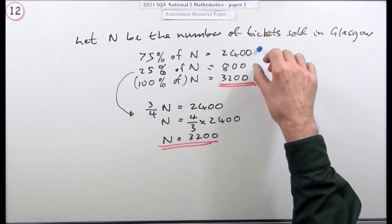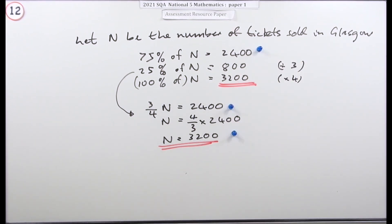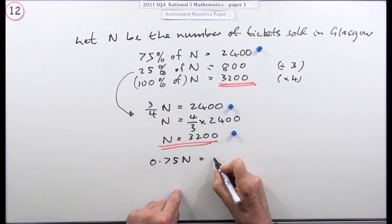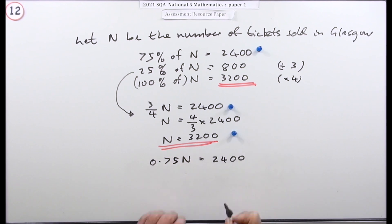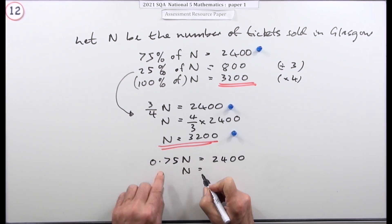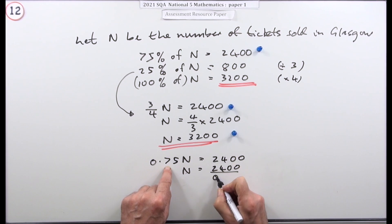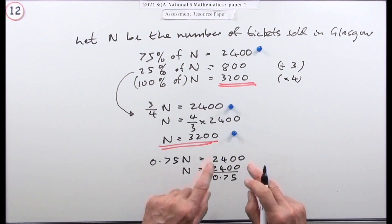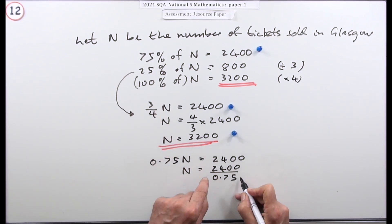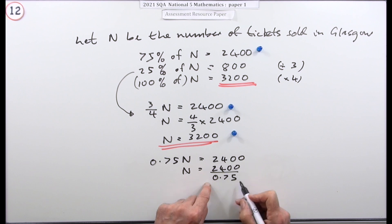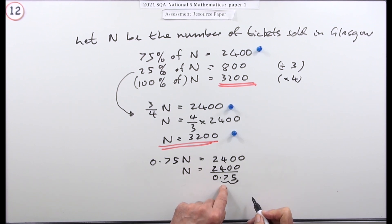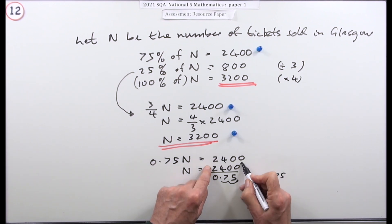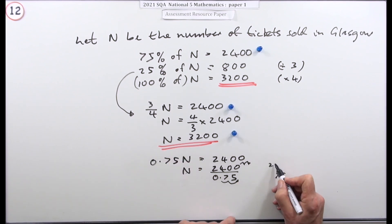Another option is the decimal form: 0.75N equals 2,400, so N equals 2,400 divided by 0.75. Without a calculator this is the worst method, because to divide by a decimal you should convert it to a whole number. Multiply both numerator and denominator by 100: N equals 240,000 divided by 75.